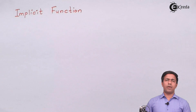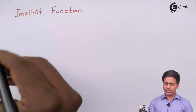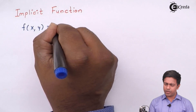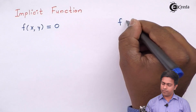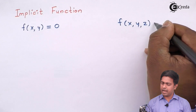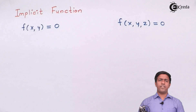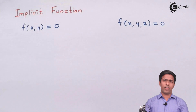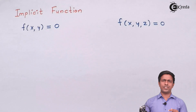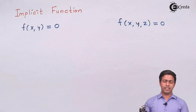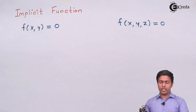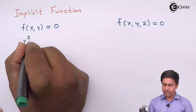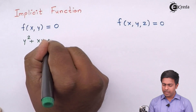To start this concept I will take one function. Let's say if I have a function of X and Y equal to 0, or if I have a function of X, Y and Z equal to 0. And let's say somebody is asking me to find out the value of dy/dx. In 12th standard we have seen a function like Y² + XY = 0.